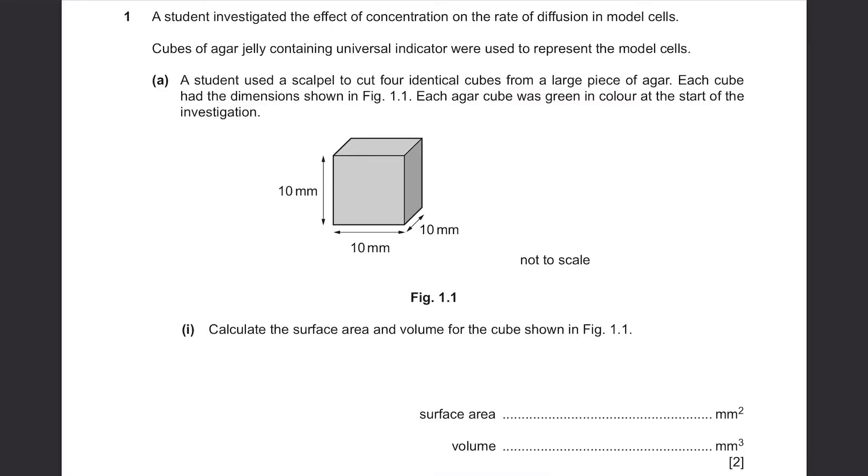A student investigated the effect of concentration on the rate of diffusion in model cells. Cubes of agar jelly containing universal indicator were used to represent the model cells. Part A. A student used a scalpel to cut four identical cubes from a large piece of agar. Each cube had the dimensions shown in figure 1.1. Each agar cube was green in color at the start of the investigation. Calculate the surface area and volume for the cube shown in figure 1.1.